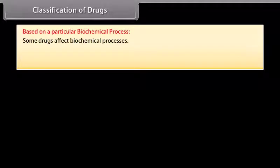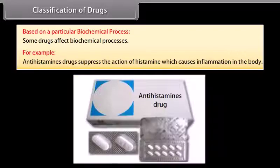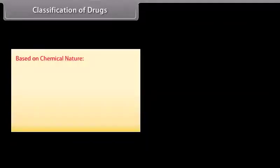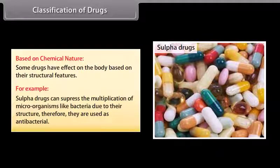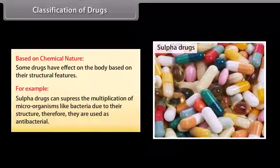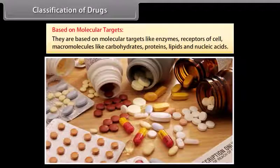For example, antihistamine drugs suppress the action of histamine, which causes inflammation in the body. Based on chemical nature: some drugs have an effect on the body based on their structural features. For example, sulphur drugs can suppress the multiplication of microorganisms like bacteria due to their structure, and therefore they are used as antibacterials. Based on molecular targets: drugs are based on molecular targets like enzymes, receptors of cells, and macromolecules like carbohydrates, proteins, lipids, and nucleic acids.